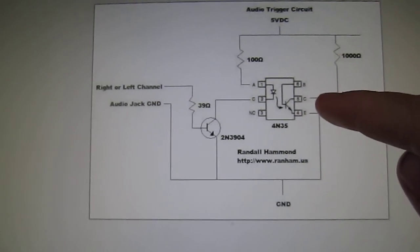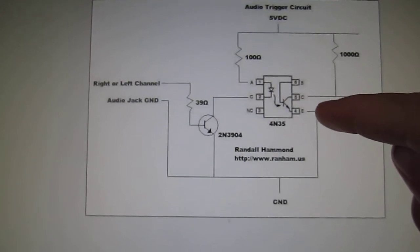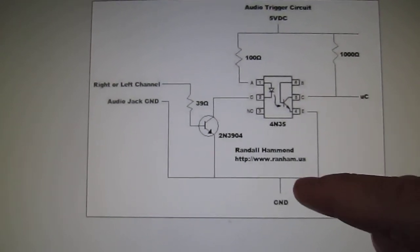So I use a 1000 ohm resistor to the collector of the opto-isolator. And the emitter gets tied to ground.